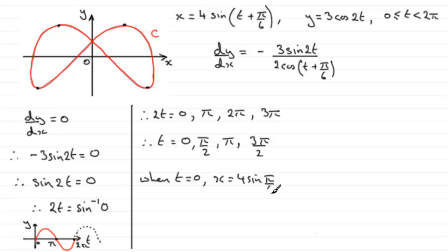And what does that come to? Well, the sine of pi upon 6 is a half, and so 4 times a half is 2. So x is 2.